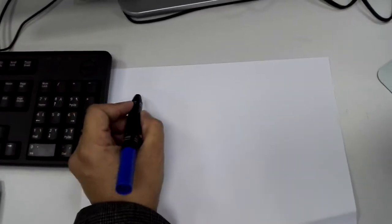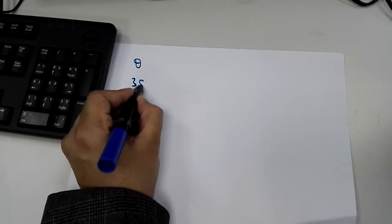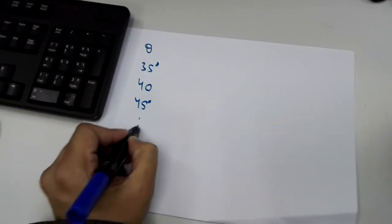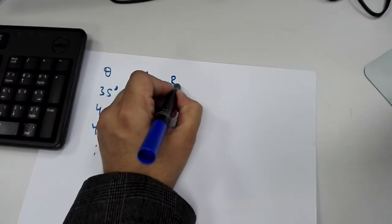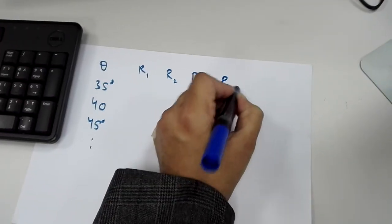And then when we have the values, we make a table: theta 35 degrees, 40, 45, and so on. Then we take three values of the range, three readings for the range, and then an average value of the range.